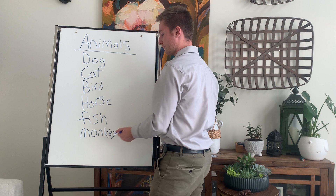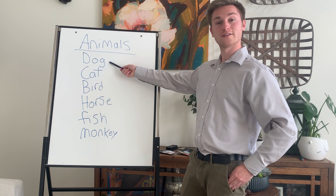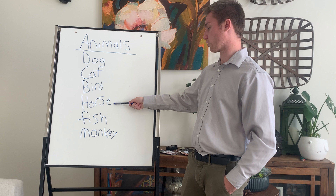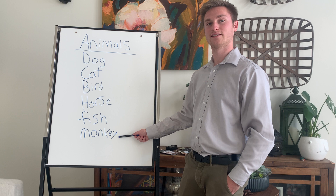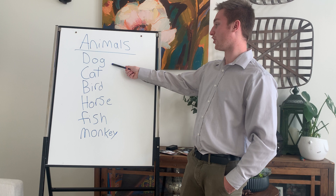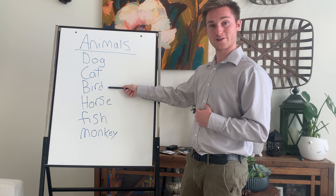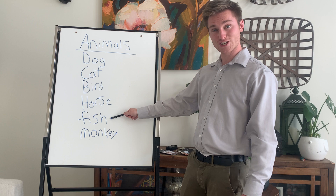And here are a few groups of animals: dog, cat, bird, horse, fish, and finally monkey. Did you say them? Try again: dog, cat, bird, horse, fish, monkey. Great.